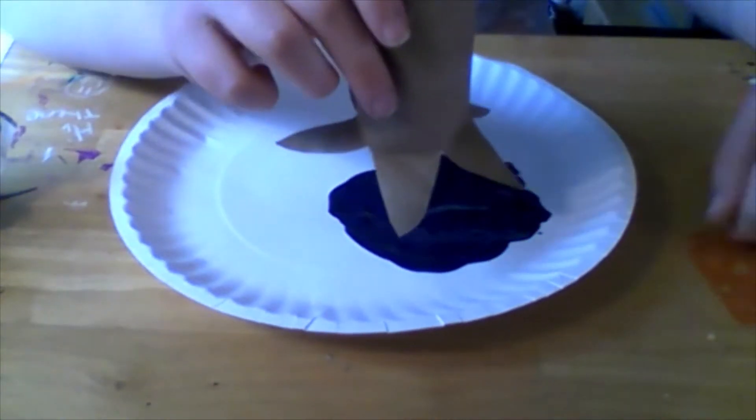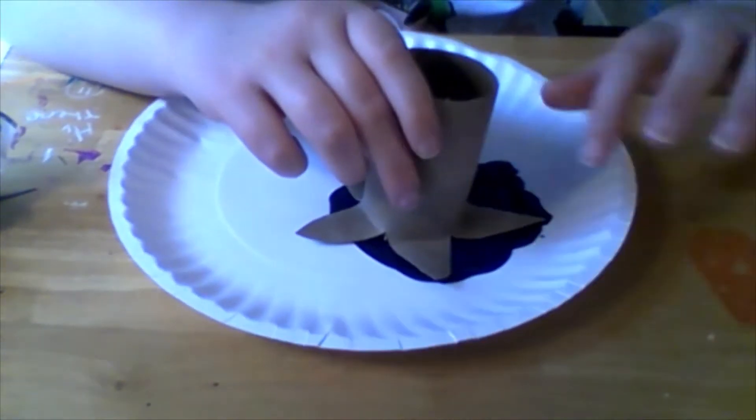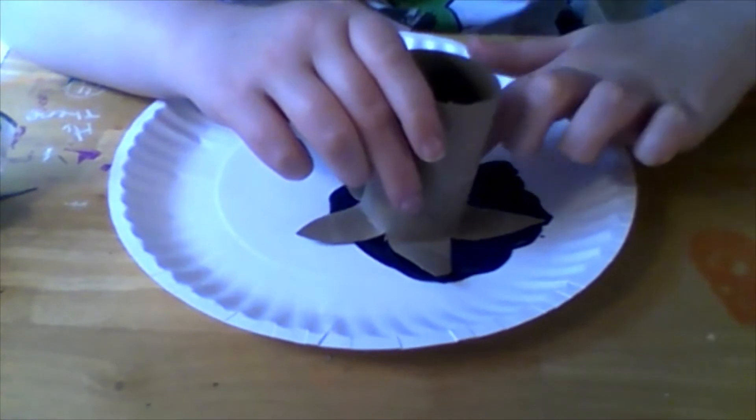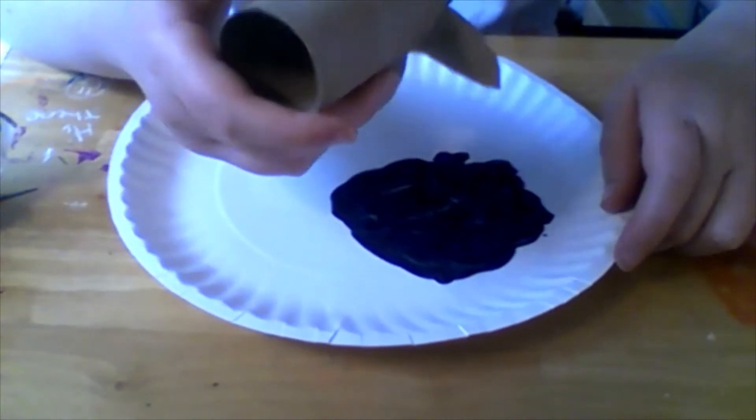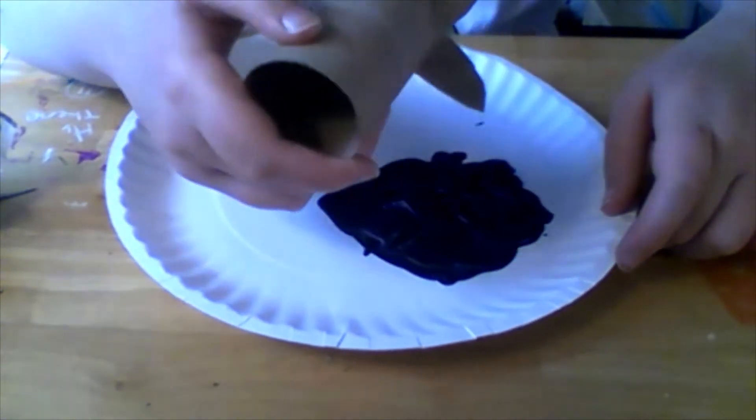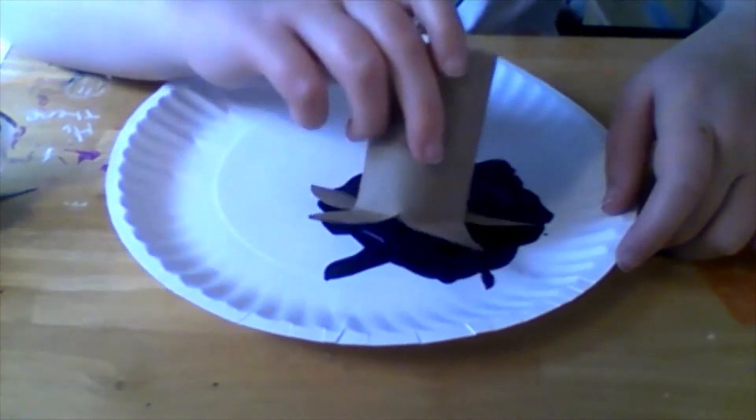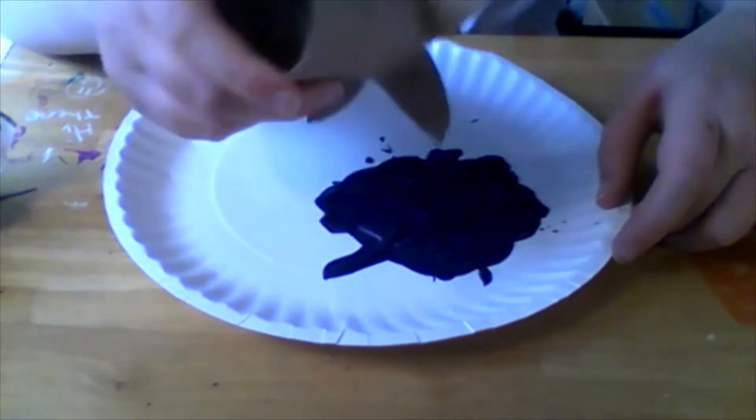Now you're going to take this and dip the bottom in the paint. You can kind of poke at it to make sure that every spot gets covered with paint. Just make sure it's completely covered so we can make a good flower.